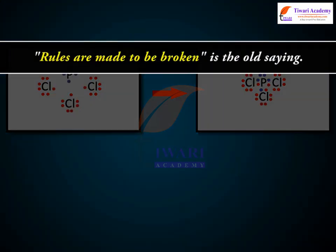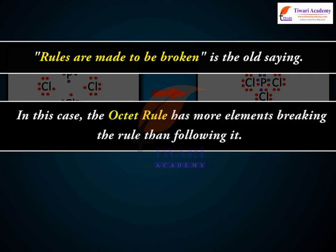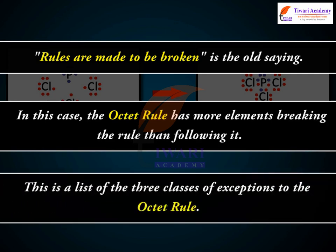Rules are made to be broken, as the old saying goes. In this case, the Octet Rule has more elements breaking the rule than following it. This is a list of the three classes of exceptions to the Octet Rule.